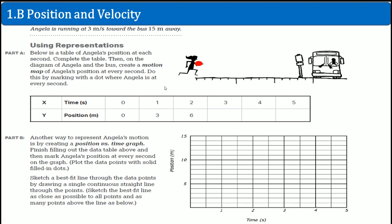That's Angelica, she starts at 0, 0. So below is a table of Angelica's position at each second. Complete the table, then on the diagram of Angelica, create a motion map of Angelica's position at every single second. So this is the motion graph.